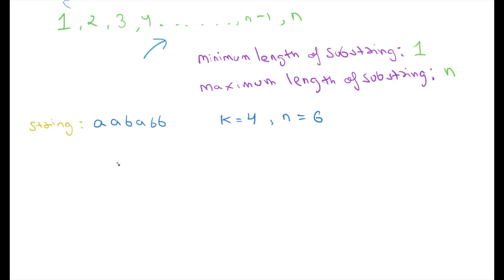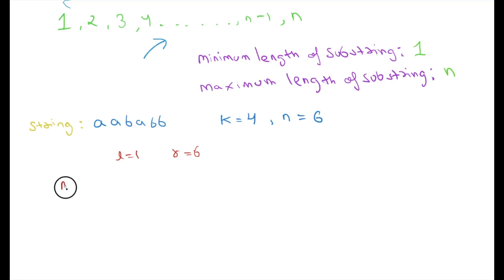The minimum possible beauty of a string is 1 and the maximum possible beauty is n, so r will become 6. Now let's find the mid value. The mid value is (1 + 6) / 2 = 3.